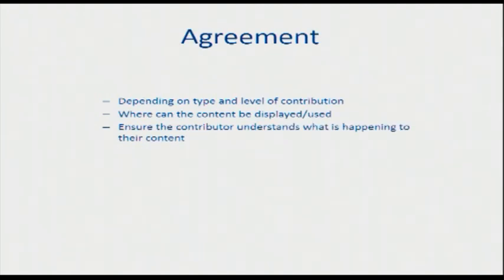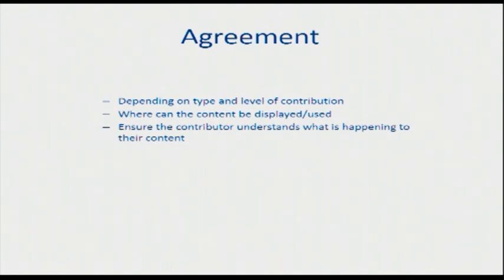No project should happen without some consideration of what will happen to the content, the user's expectations, and resourcing. And this means we need agreements as well — clear understanding between the museum and the user as to what will happen with the contribution during and after the engagement. For media or other things created by users, that means licensing and potentially gift agreements. For anonymous comments, opinions, or even likes, it's much simpler, but the landscape is shifting and we do need clarity. We need clear understanding of where we can use the content contributed, and we need to ensure the contributor understands exactly what's going to happen to the content afterwards.